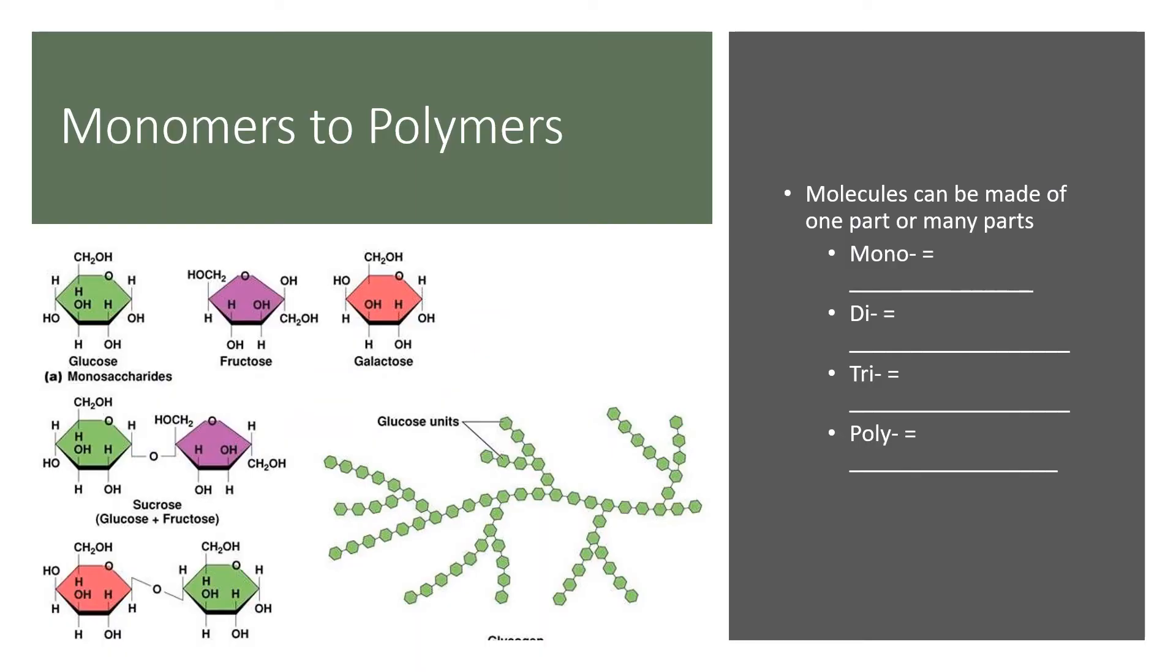Molecules can be made of one part or many parts. A monomer refers to one part. You have a molecule that has just one component to it. Examples of monomers include glucose. You can see that's just one ring. Fructose, which is also one ring. The other stuff is just like branches on that ring. And galactose. These are the three monosugars, simple sugars, or monosaccharides.